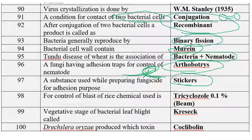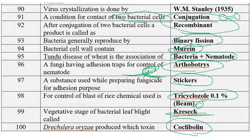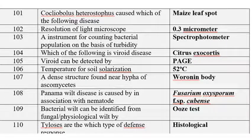For the control of rice blast pathogen, Tricyclozole is the fungicide especially recommended — rice blast is caused by Pyricularia oryzae or Magnaporthe grisea. The trade name of Tricyclozole is Beam. The vegetative stage of bacterial leaf blight is called the kresek phase — it is also the most destructive phase. Drechslera oryzae or Bipolaris oryzae produces a toxin called Cochliobolin.